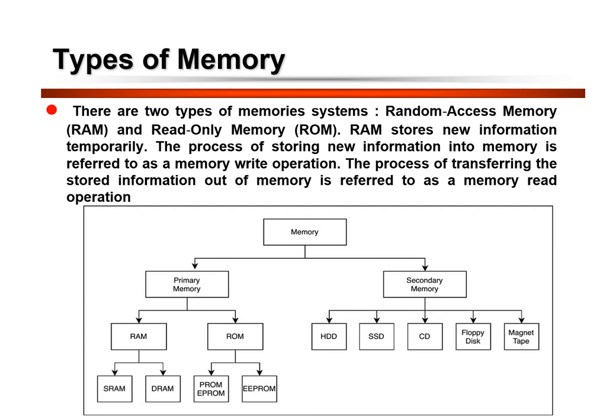The basic memory structure in memory devices can be broadly classified into two types: volatile and non-volatile memory. Volatile memory, such as RAM, is temporary and requires power to maintain the stored information. Non-volatile memory, such as read-only memory and flash memory, can retain stored information even when there is no power supply.